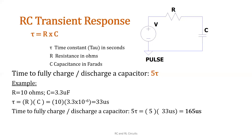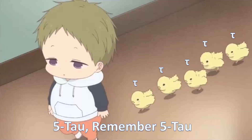If it's both charge and discharge, it will be 165 microseconds times 2. Always remember 5 tau — regardless of whether it's RC or RL, we use 5 tau.